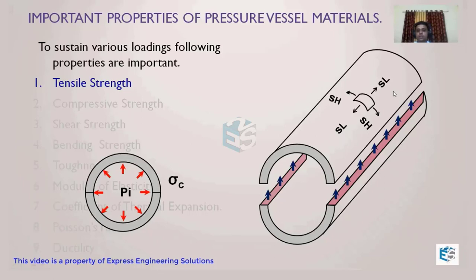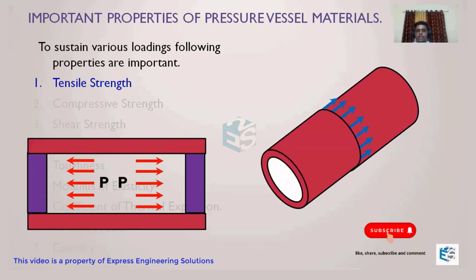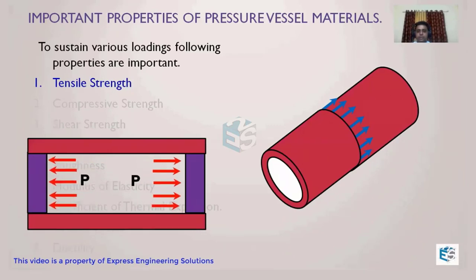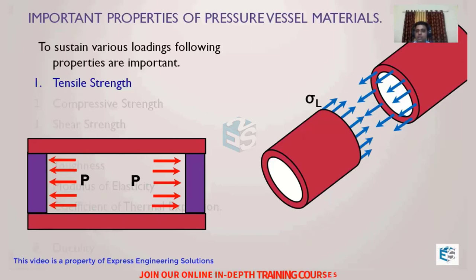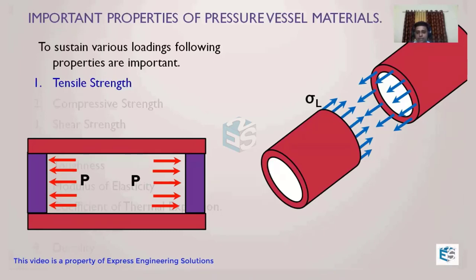Tensile strength is a very important property of the material required to sustain internal pressure — circumferential tensile stress will be developed along the circumference. Additionally, as we can see, the pressure applies on the ends of the cylinder, which may split it into two halves. This creates a pull on the walls — a tensile longitudinal stress along the cross-section of the vessel. So tensile strength is essential whenever there is a pressure application.